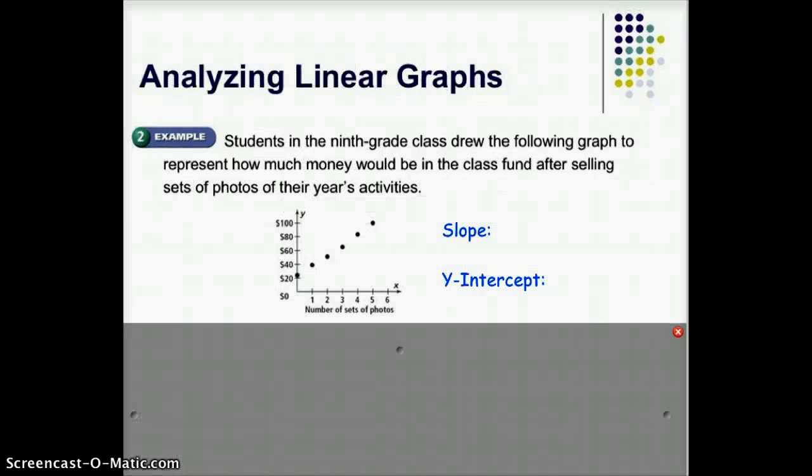All right. This time we are going to look at a graph, and you are going to try to analyze it when it's already made for you. So I want you to look at this graph. Students in the 9th grade class, they drew the following graph to represent how much money would be in the class fund after selling sets of photos of their year's activity. It's really helpful if you can come up with a good approximation for the slope and y-intercept. Looks to me like this point right here. I'm going to guess that's near 5,100. I'm going to guess this point right here is about 0,25. I'll just make that approximation.